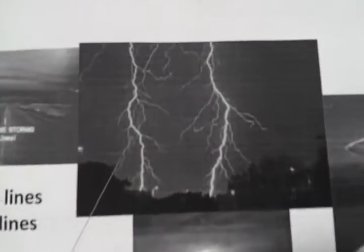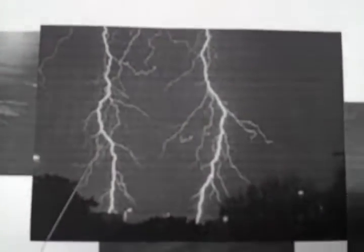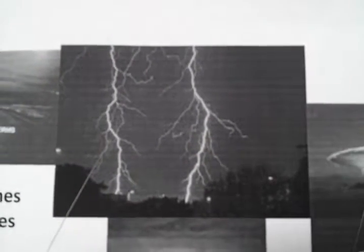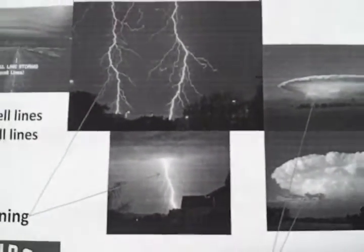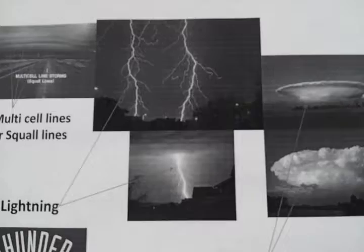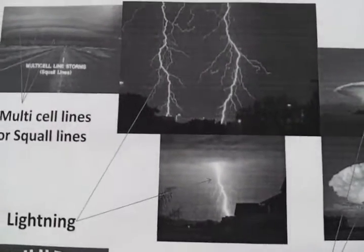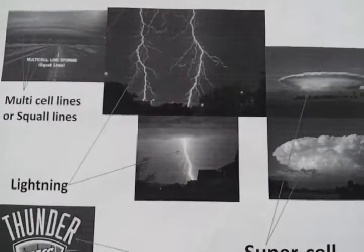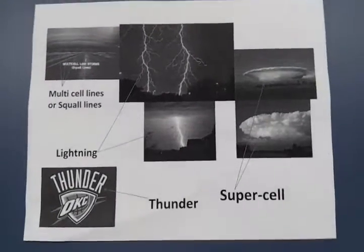Lightning is an electrical discharge that occurs in a thunderstorm. It can be seen in the form of a bright streak or bolt from the sky. Lightning occurs when an electrical charge is built up within a cloud. When enough charge is built up, a large discharge occurs, and that is known as lightning. The temperature of a lightning bolt can be five times hotter than the surface of the sun.